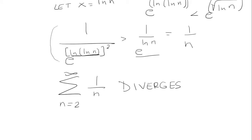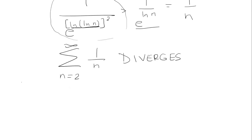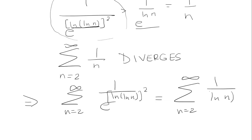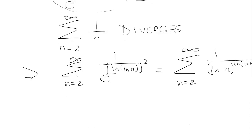We found that the original sum is bigger than 1 over n, which means our original sum should also diverge. This implies the series diverges by the comparison test. The series 1 over ln of n raised to the ln of ln of n power diverges by the comparison test.